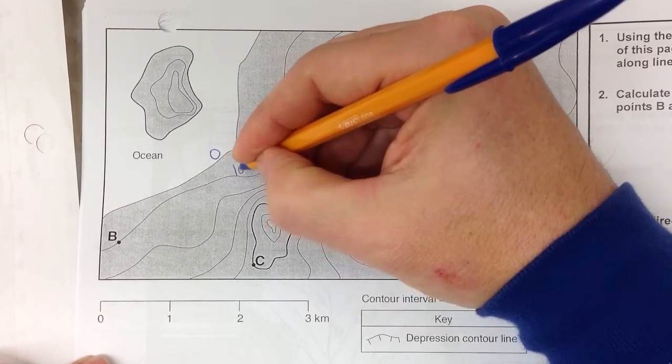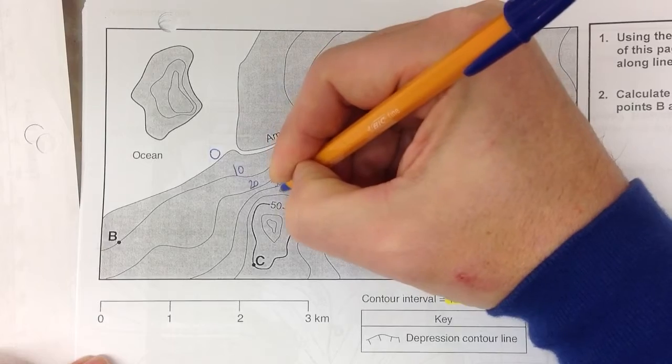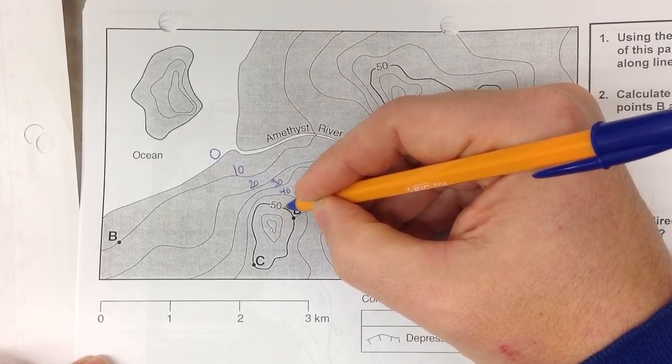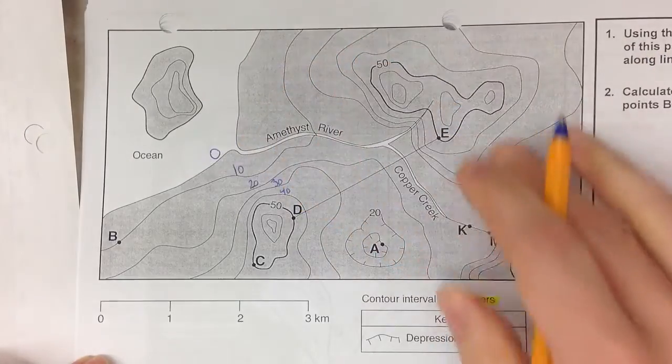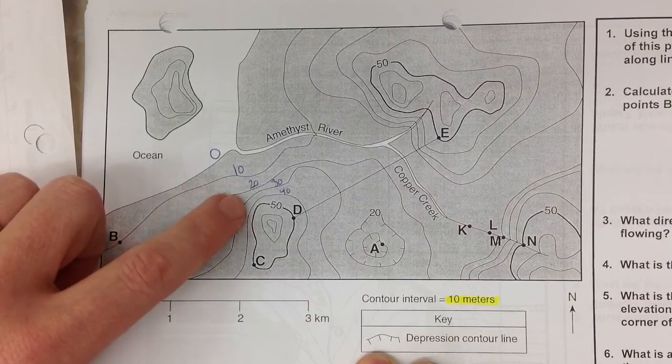I know I'm going to be going uphill 10, 20, 30, 40, because there's my 50 line right there. So really looking at your contour map, you should be able to identify what each line is going to go up and down by.